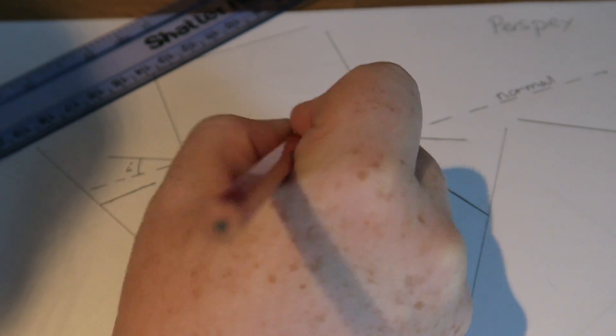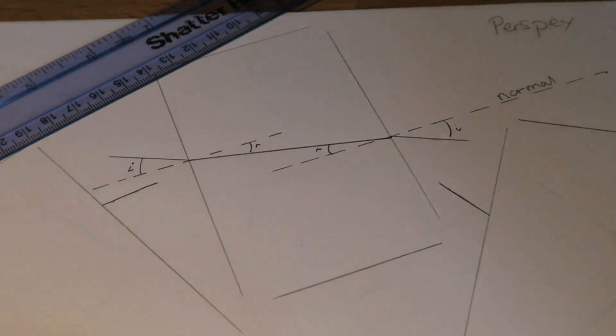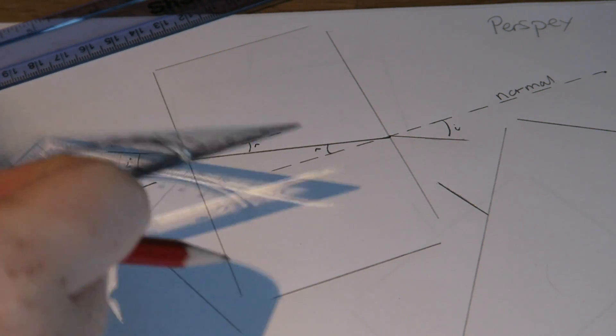Same on the other side. There is our angle of refraction. There is our angle of incidence. Now, I can use my protractor to measure these values.